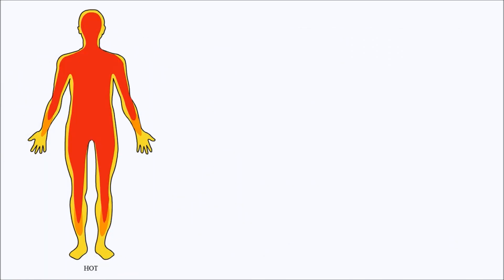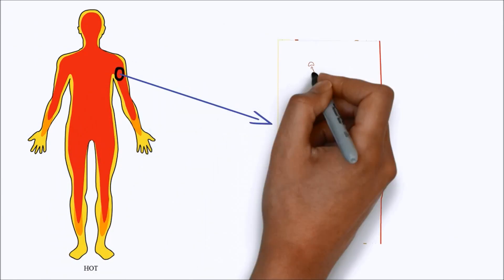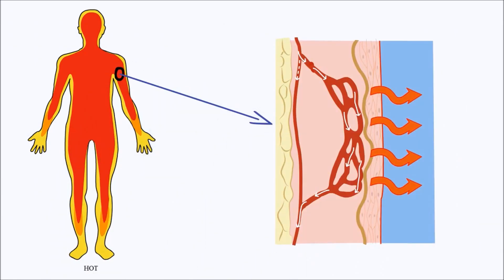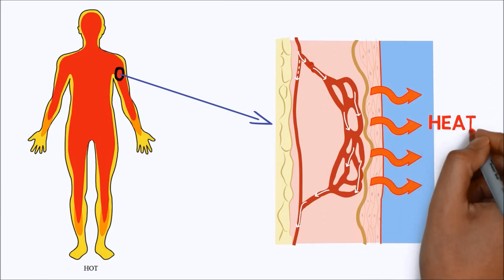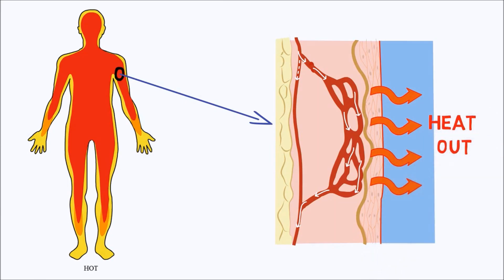When we are too hot, blood vessels supplying blood to the skin can swell or dilate. This allows more warm blood to flow near the surface of the skin where the heat can be lost to the air. This is why some people's skin looks redder when they feel too hot.